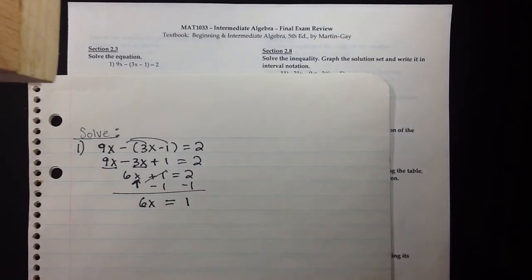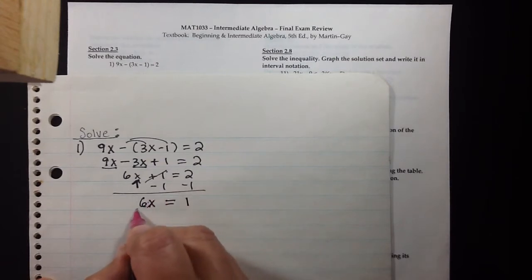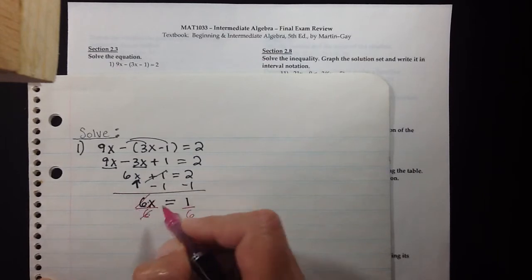Whatever we do on the left, we must compensate and do on the right as well. The last step is to solve for x. To make the x stand alone, there's a six multiplied on, so we do the opposite and divide by six to cancel the six out. Now the x stands alone and is 1/6.